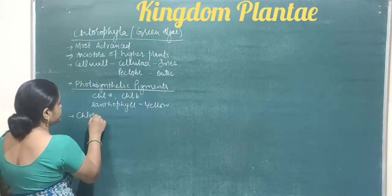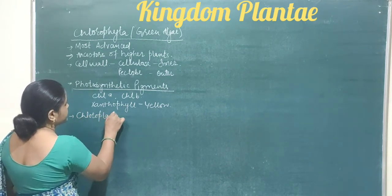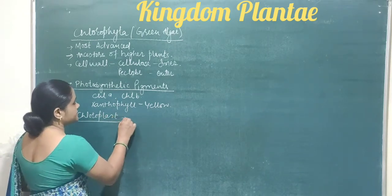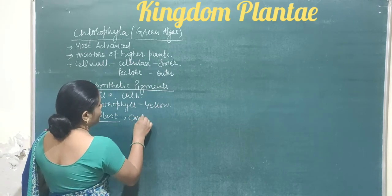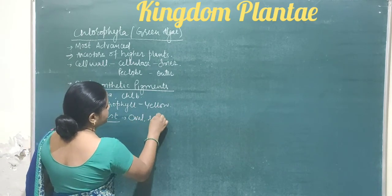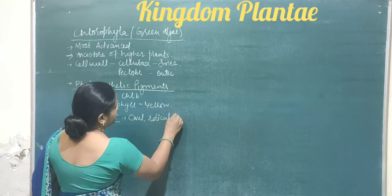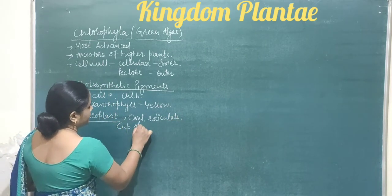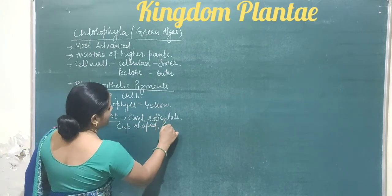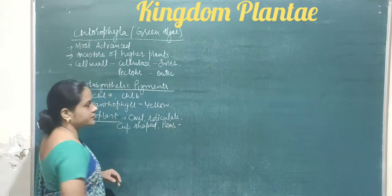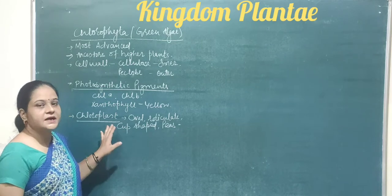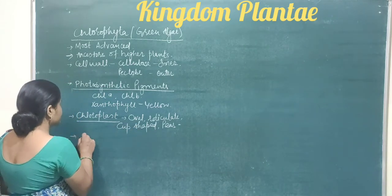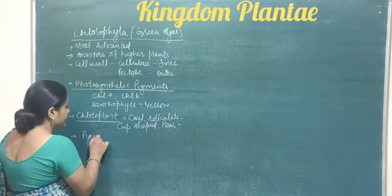The chloroplast is the organelle which consists of the photosynthetic pigment. The chloroplast may be of various shapes — it may be oval, reticulate, cup-shaped, or pear-shaped. There are many shapes of the chloroplast. The chloroplast also consists of a specific structure named pyrenoid.